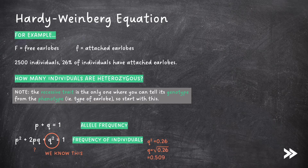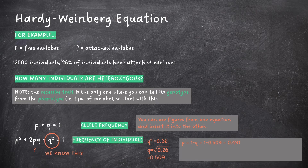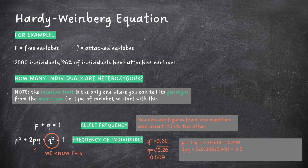Note that you can use figures from one equation and insert them into the other. Since q² = 0.26, q = √0.26 = 0.509. Now we can calculate p using the first equation: p + q = 1, so p = 1 − q = 1 − 0.509 = 0.491. We want to find 2pq, where p = 0.491 and q = 0.509. Therefore 2pq = 2 × 0.491 × 0.509 = 0.5. We can now multiply this by the total population: 0.5 × 2,500 = 1,250 individuals that are heterozygous.